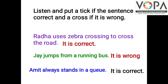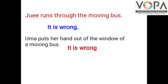Listen and put a tick if the sentence is correct and a cross if it is wrong. Radha uses zebra crossing to cross the road — it is correct. Jay jumps from a running bus — it is wrong. Amit always stands in a queue — it is correct. Juyi runs through the moving bus — it is wrong. Ooma puts her hand out of the window of a moving bus — it is wrong.